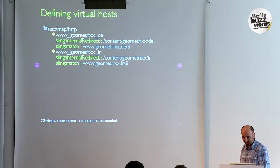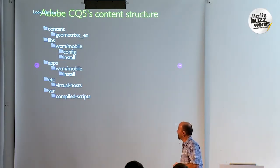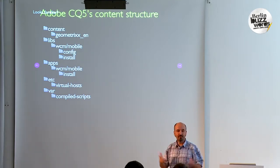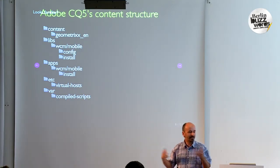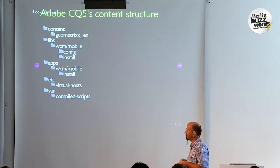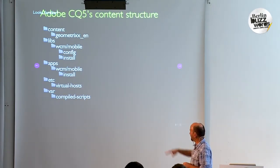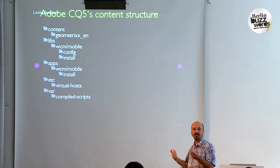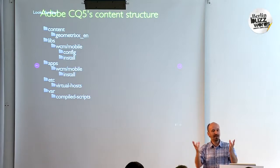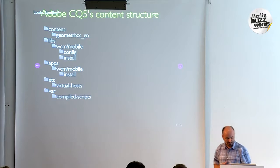This is pretty much the content structure we use in our product. If you're familiar with Linux or Mac systems, it's very similar. We have a slash content folder for the proper web content, libs where we store our code, etc for configuration stuff, and var for things that are moving. So your system ends up looking a bit like a Unix file system, but there's much more inside because of JCR underneath.